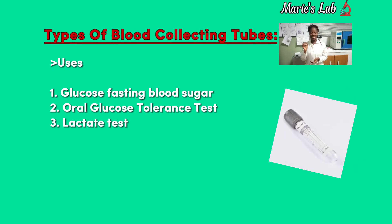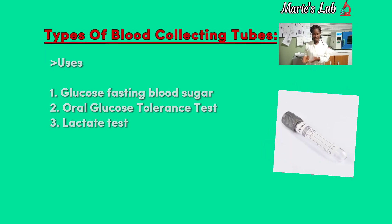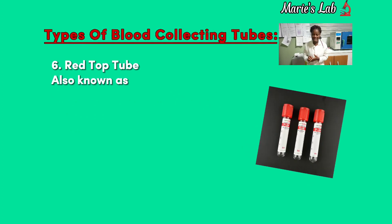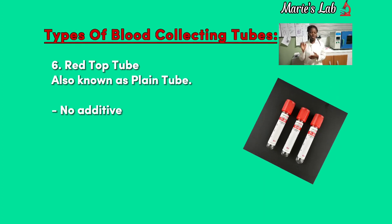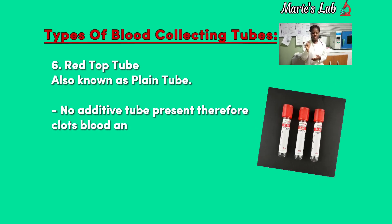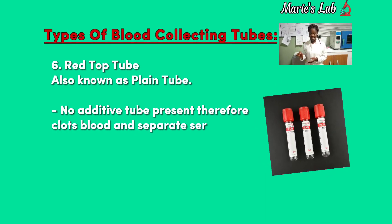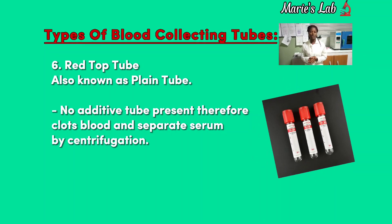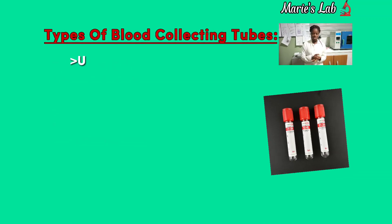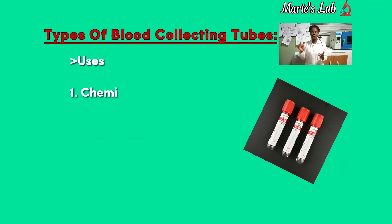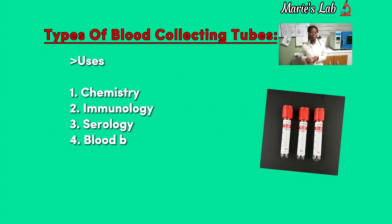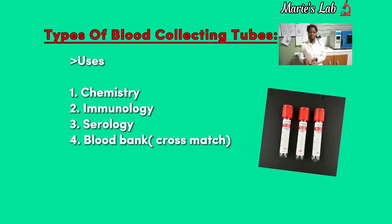Red tube, also known as plain tube, no additive present. Therefore blood clots and produces serum by centrifugation. Uses of these tubes: chemistry, immunology, serology, and blood bank.